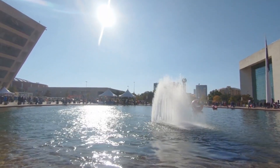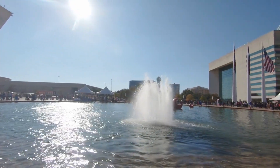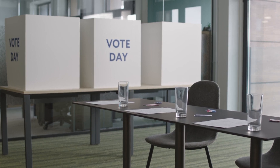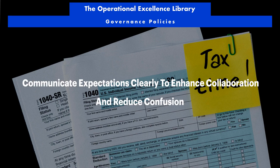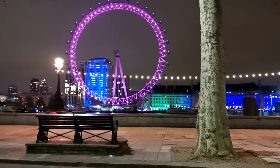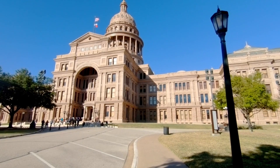By combining the RAGI Framework with the Operational Excellence Policy, organizations can create a robust governance structure that ensures accountability, transparency, and operational excellence. The RAGI Framework provides a clear and structured approach to assigning roles and responsibilities, while the Operational Excellence Policy provides the overall direction and guidance for achieving operational excellence. These governance documents are essential for ensuring all stakeholders understand their roles and are working towards a common goal.